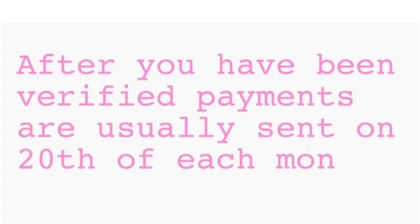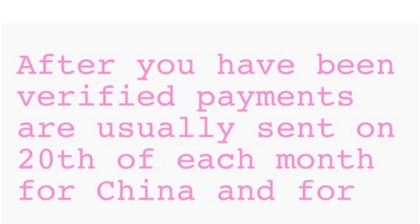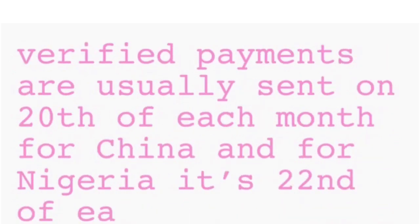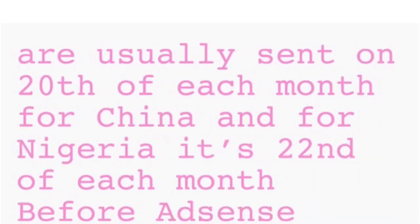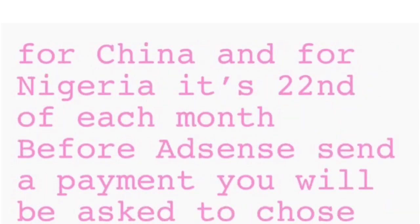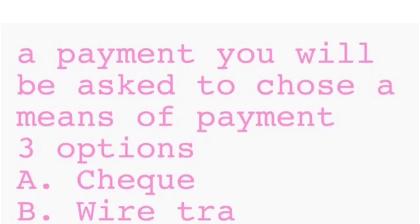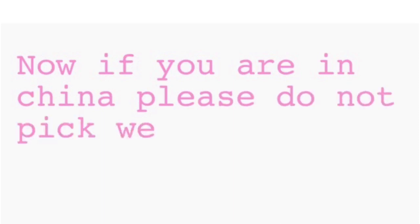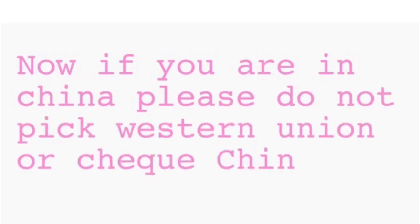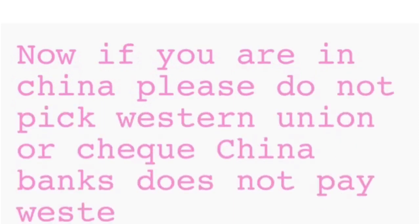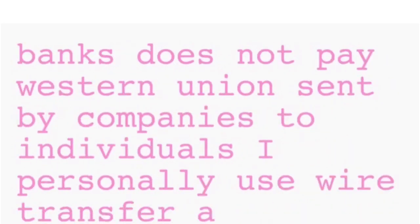How do I receive payment? After being verified, payments are usually sent on the 20th of each month for China, and the 22nd for Nigeria. Before AdSense sends a payment, you'll be asked to choose a means of payment. There are three options: check, wire transfer, or Western Union. If you're in China, please do not pick Western Union or check — China banks do not pay Western Union sent by companies to individuals.